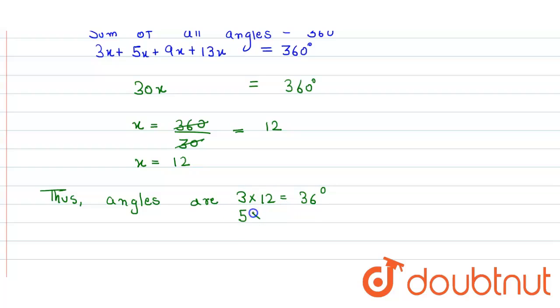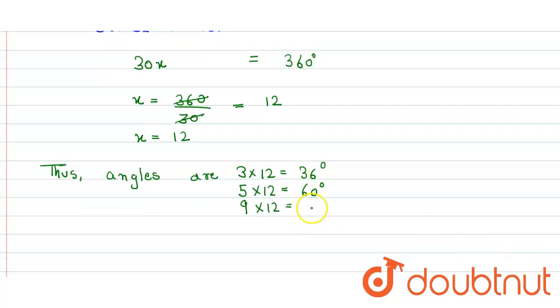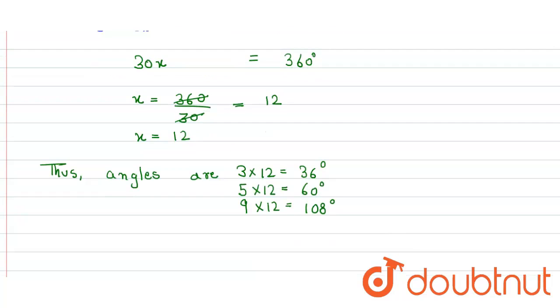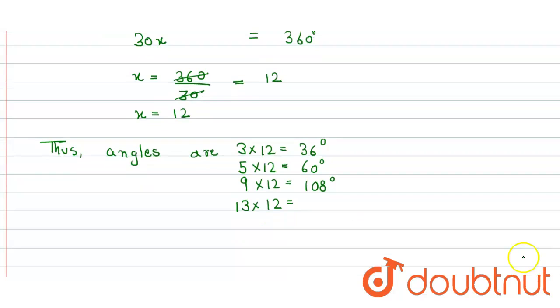Similarly, second angle will be 5 × 12 = 60°. Third angle is 9 × 12 = 108°. And the fourth angle is 13 × 12 = 156°.